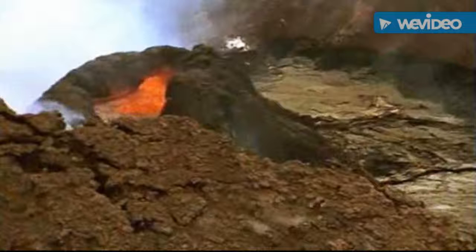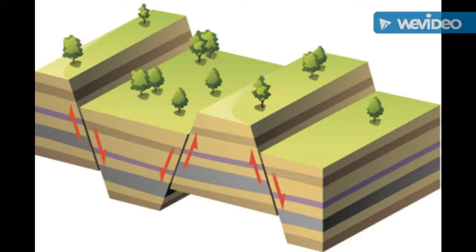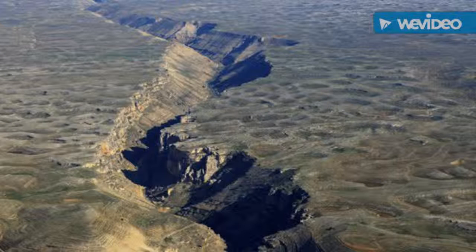Tectonic plates consist of lithospheric mantle overlaid by one or both of two types of crustal material. Average oceanic lithosphere is typically 100 kilometers thick, and this thickness is a function of its age as it passes over time.